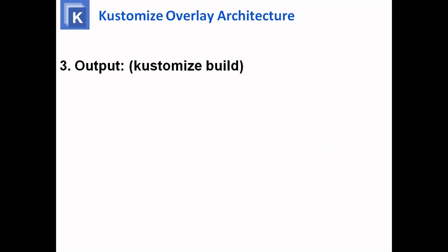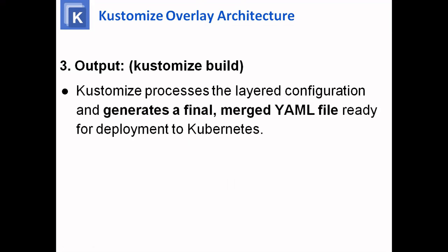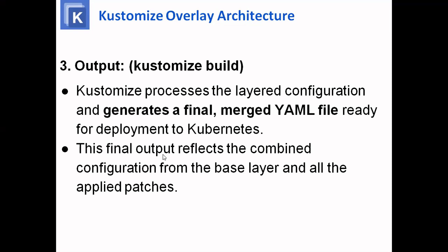The Kustomize build is the output. We can see the output before executing whatever code we have added. Kustomize processes the layer configuration and generates the final merged YAML file ready for deployment to Kubernetes. This final output reflects the combined configurations from the base layer and all the applied patches.